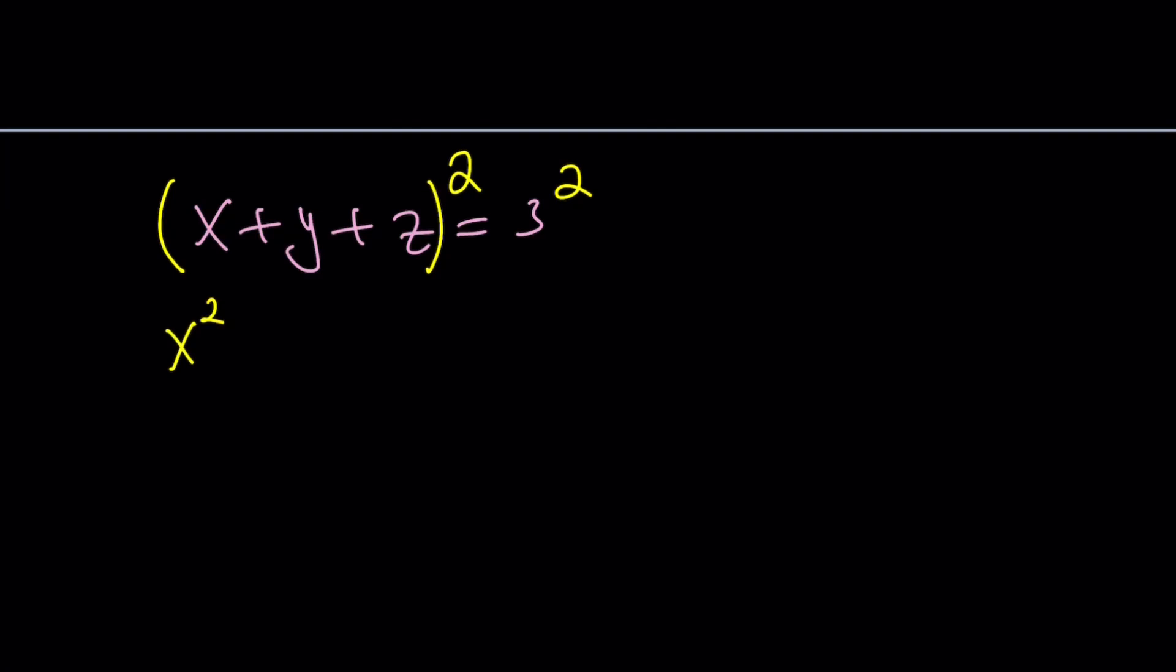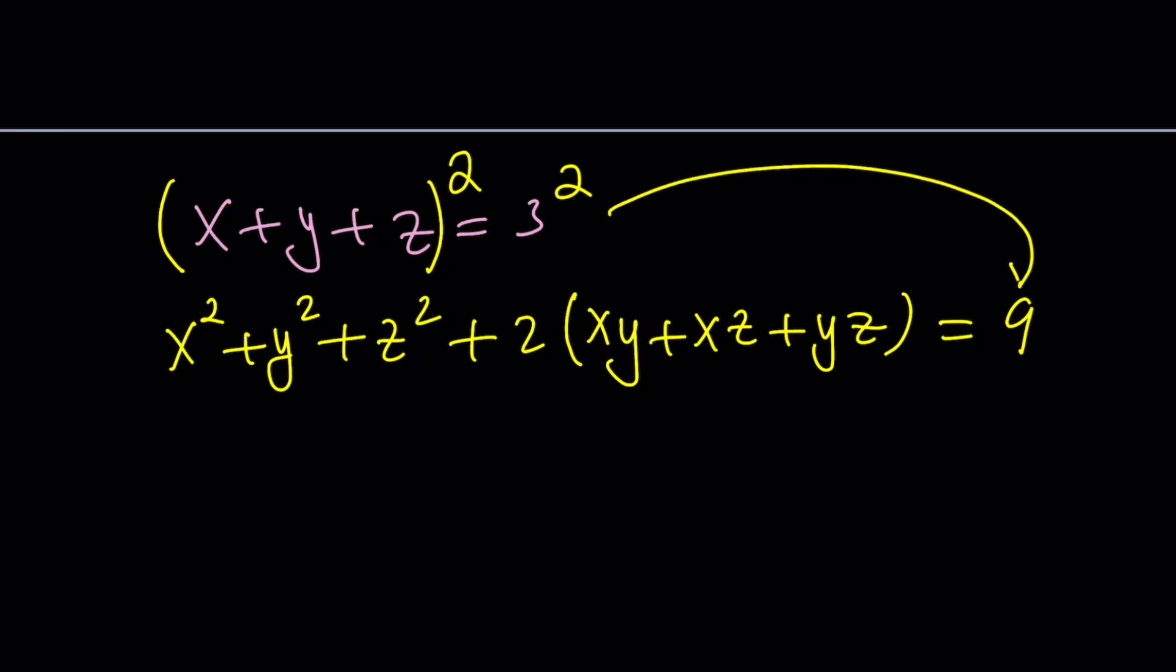This gives us x squared plus y squared plus z squared. And then we have the xy, xz, yz. Each of them comes twice. So we're going to write it as 2 times the quantity xy plus xz plus yz. And this is equal to 9 because 3 squared is equal to 9.